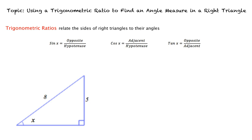An easy way to remember these ratios is SOHCAHTOA. This acronym can help us remember sine of x equals opposite over hypotenuse, cosine of x equals adjacent over hypotenuse, and tangent of x equals opposite over adjacent.